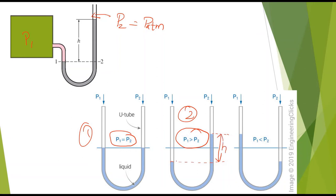In figure three, P1 is less than P2 — the pressure inside the container is less than atmospheric (vacuum pressure). Here atmospheric pressure is greater, so the manometric fluid in the right limb goes down and the level in the left limb increases. We can again measure the level difference h and use it to find the pressure.